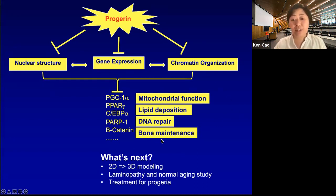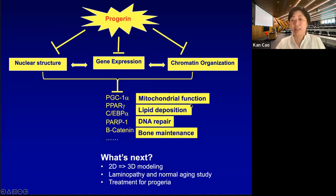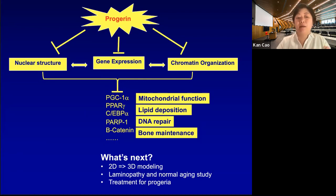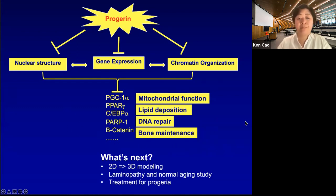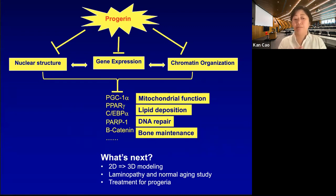We identified a set of genes affected by the presence of progerin. These genes play essential roles in the cell types we study. For example, PGC1-alpha is a gene we identified in adipocyte differentiation — it orchestrates mitochondrial function, which is very important for brown fat cells. Changes in these genes affect pathways and lead to the premature aging phenotypes we observe in progeria. So we now have a list of affected genes — what will be the next step?